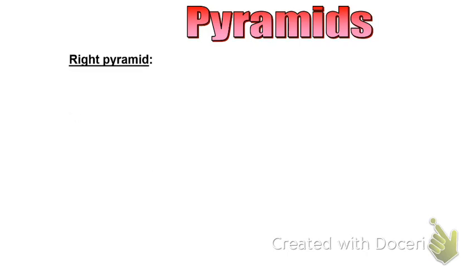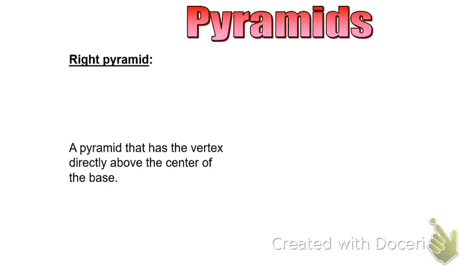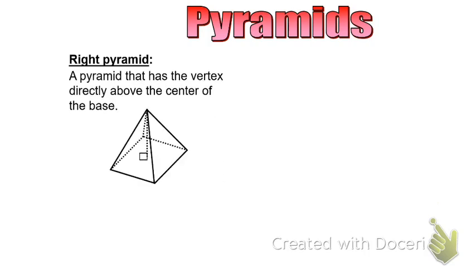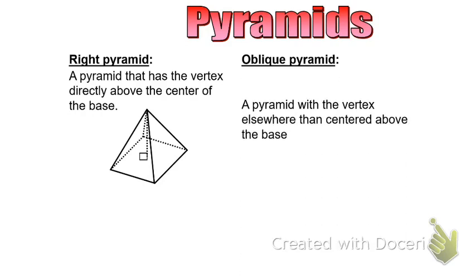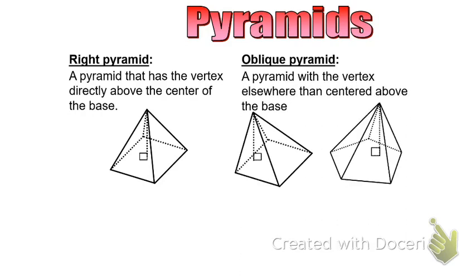First, the right pyramid. The right pyramid is a pyramid where the vertex is located directly above the center of the base. That is opposed to an oblique pyramid, where the vertex is located somewhere other than over the center of the base. Imagine the vertex at the top of the right pyramid has been pulled to the side — that forms an oblique pyramid.